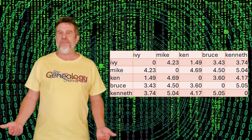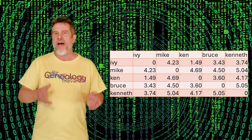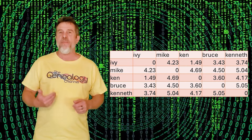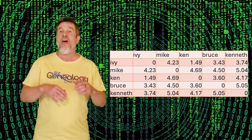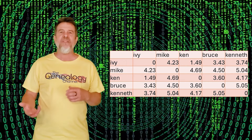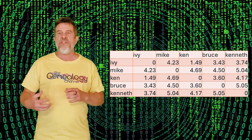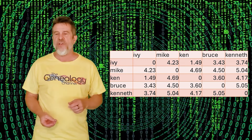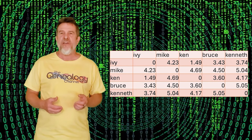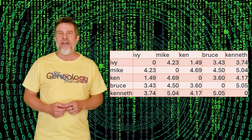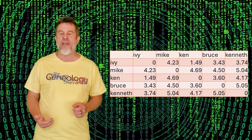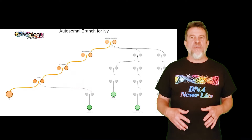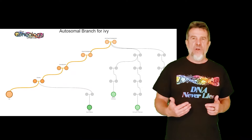The relationship matrix is a grid with names across the top and down one side: Ivy, Mike, Ken, Bruce, and Kenneth. Building the matrix myself gives me flexibility — the first name in the matrix will be the focus person and it will create their tree. I fill in the grid with the amount of DNA shared between each pair, then convert the amounts to generations, because I want the output to be in generations. If all these cousins were in GEDmatch, the visualization tools would do this for me. The finished grid gets pasted into the auto-branch tool — and ta-da! Ken and Bruce have great trees, and based on the auto-branch tool, I can see how far back I need to go to look for a common ancestor.